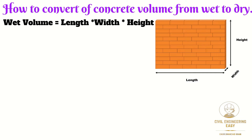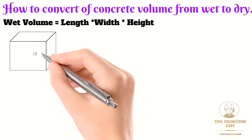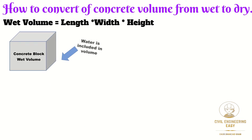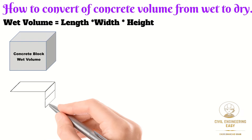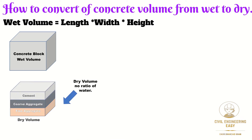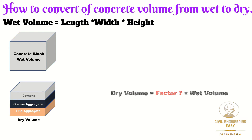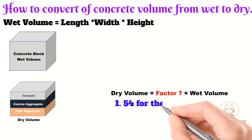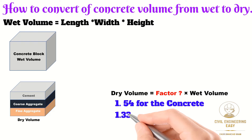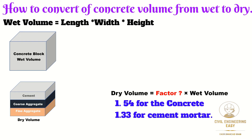In civil engineering quantity estimation, we usually calculate the wet volume of different structural elements by multiplying the length with width and height. In wet volume, the volume of water is already included in the calculation, but in dry volume of concrete there is no water. The factor we use to multiply the wet volume to get the dry volume is 1.54 for concrete and 1.33 for cement mortar.